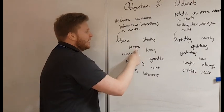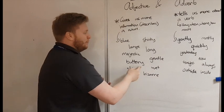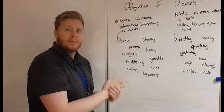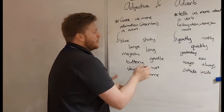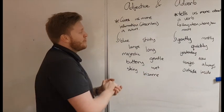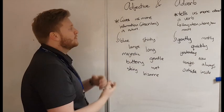So an adjective is linked to nouns because it gives us more information or describes a noun. So we've got blue, stinky, large, long, majestic, gentle, buttery, wet, shiny, bizarre. So these come and tell us information about a noun. So the shiny car, the gentle giant, and the long pool cue. It gives us information about that.